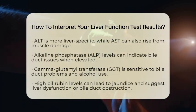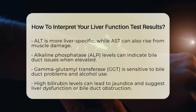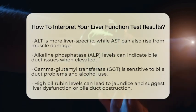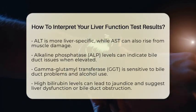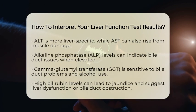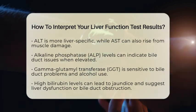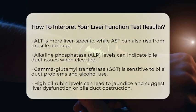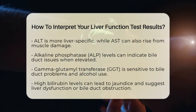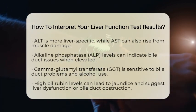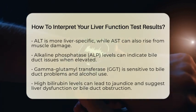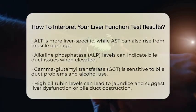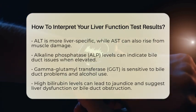Bilirubin is also measured in LFTs. It is a breakdown product of red blood cells processed by the liver. High bilirubin levels can lead to jaundice and may suggest liver dysfunction or bile duct obstruction. Albumin and total protein levels are also important. These proteins are synthesized by the liver, and low levels may indicate impaired liver function.